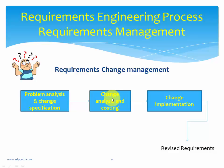A change control board consists of nominated members who decide whether to incorporate a requested change or not. This board will either recommend going ahead with the change or inform the customer that the change cannot be incorporated, or that it will cost a specific amount of money. That is change analysis and costing. Once this stage is done, we go for change implementation — implementing the approved changes and ensuring that you get the software deliverable as a result of the change request.